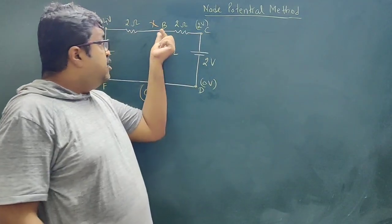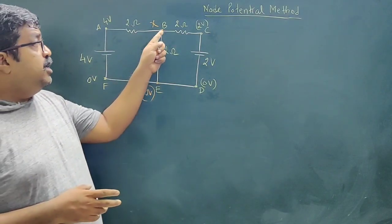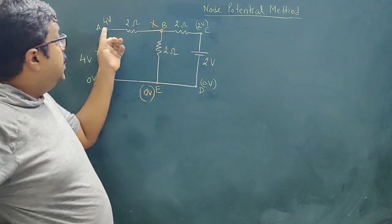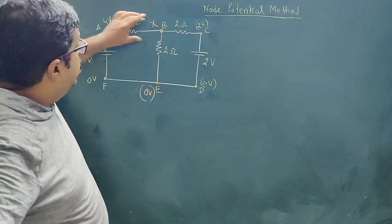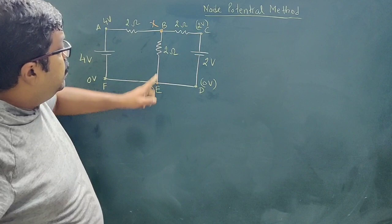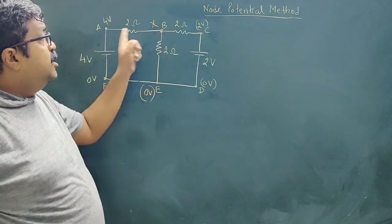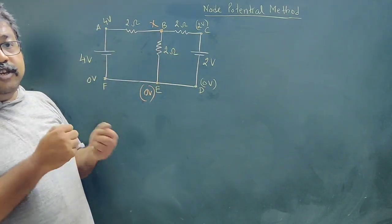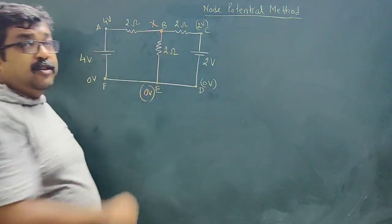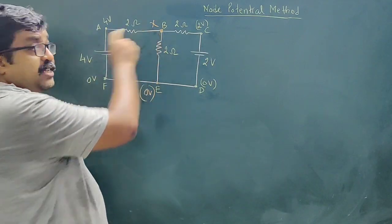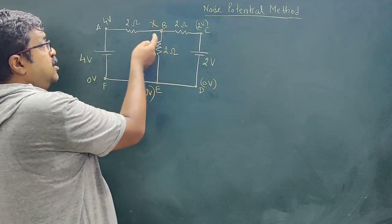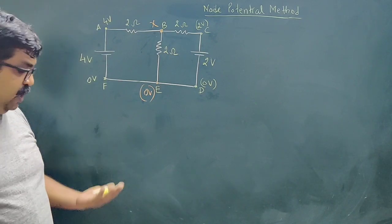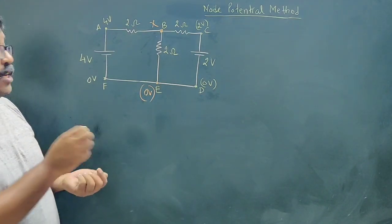Now the method is: at this node, you assume that the potential is lowest in comparison to the other three. If the potential is lowest, current will flow towards the node from each branch, because the other points are at higher potential. So the total current flowing towards the junction will be equal to zero — that is the junction rule. Alternatively, you can assume this potential is highest, and then all currents flow away from the junction; the sum is still zero.